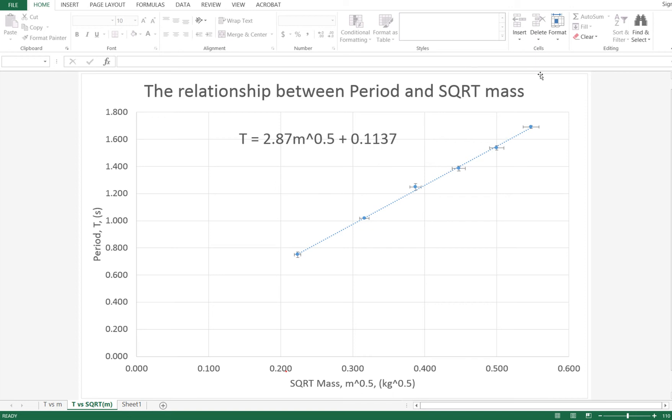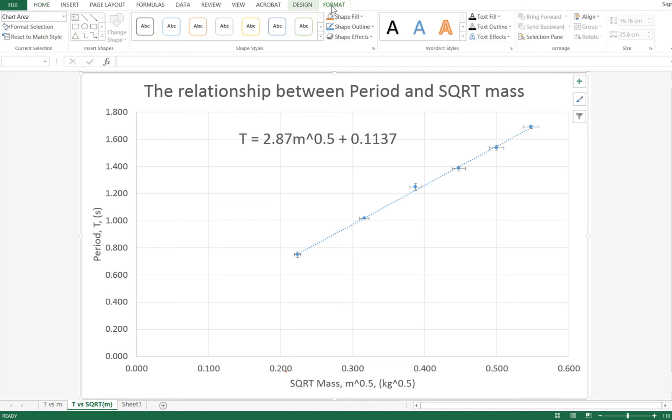To do that, click on the graph and when you do that you'll see that you get a design and a format tool pop up. Click on format and from here you have the option to add some shapes. We're going to use the line tool and we're going to actually generate a line of worst fit that way.